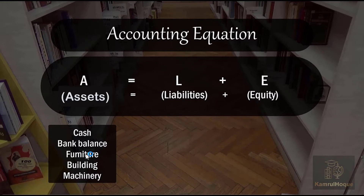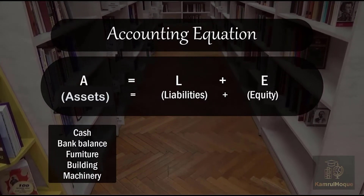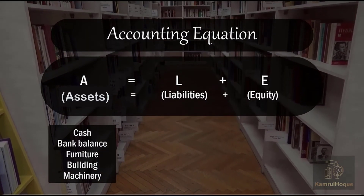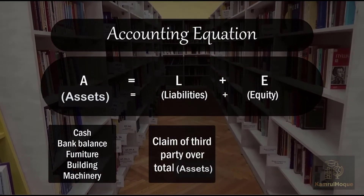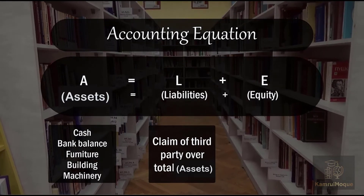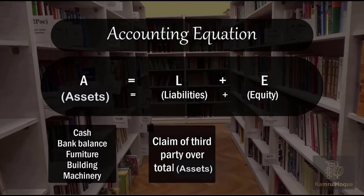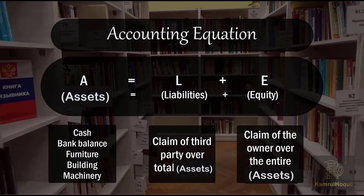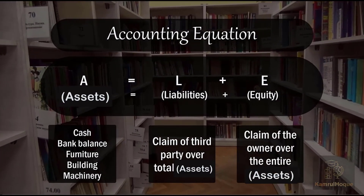Assets include cash, bank balance, furniture, building, and machinery. Liabilities are the claim of a third party over the total assets. Equity is the claim of the owner over the entire assets.